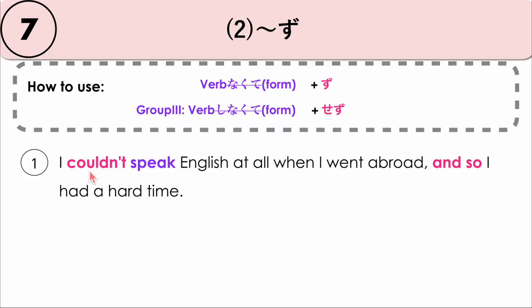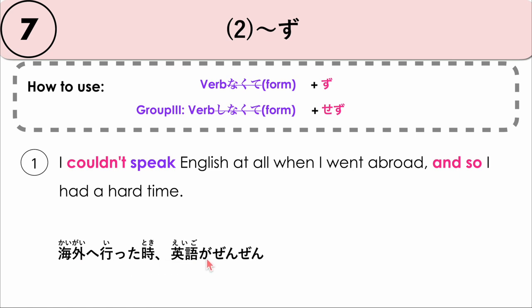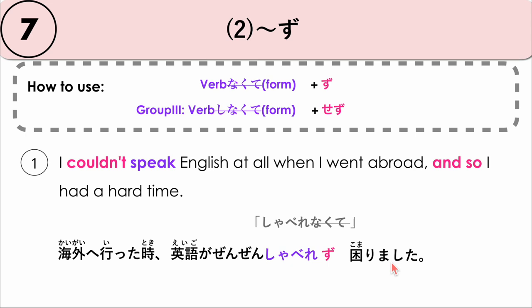For example: I couldn't speak English at all when I went abroad, and so I had a hard time. We say: kaigai ni itta toki — when I went abroad — eigo ga zenzen — our verb is to speak — shaberenakute. Shaberenakute, we remove nakute, which leaves us with shabere plus zu. I wasn't able to speak, and so komarimashita — I had a hard time. Kaigai ni itta toki, eigo ga zenzen shaberezu, komarimashita.